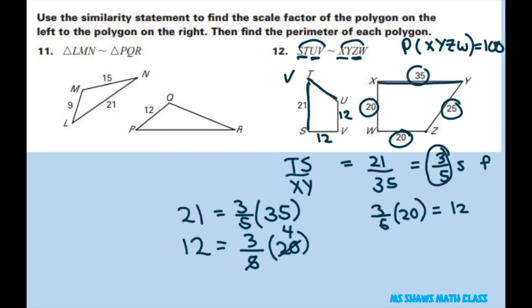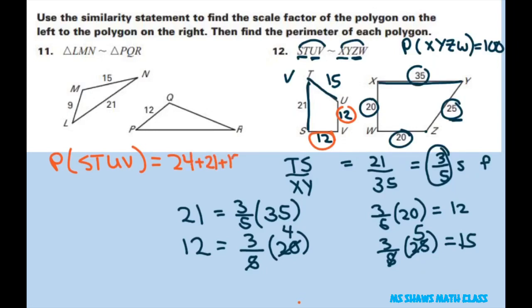And the last one we have is 25. So we're going to do three-fifths of 25. That five goes into 25 five times. So that equals 15. Now, to get this perimeter, we're going to do the perimeter of STUV, and that equals these two are 24 so that's 24 plus 21 plus 15 and that's going to equal 60 so this is 60 perimeter this is 100 perimeter and that's it. Thank you, have a nice day, bye.